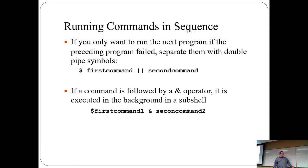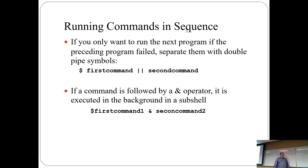Just like double ampersand is AND, you can also do OR using a double pipe (||). If the first program failed, then you want to run the second program. Double pipe means: run the second program if the exit code is anything but zero.